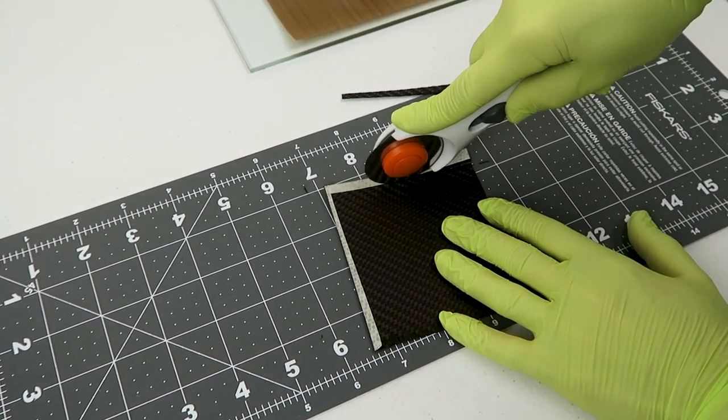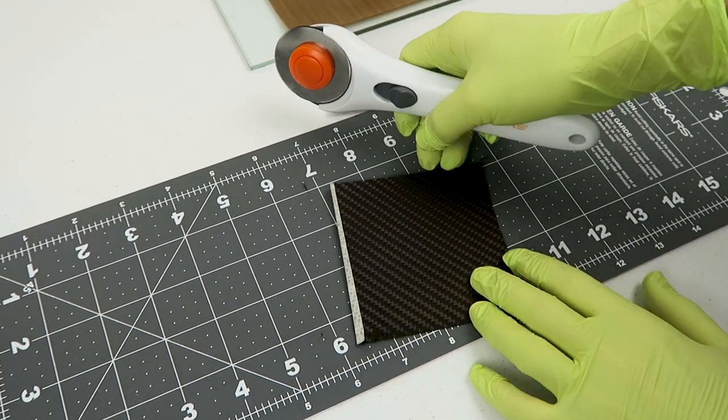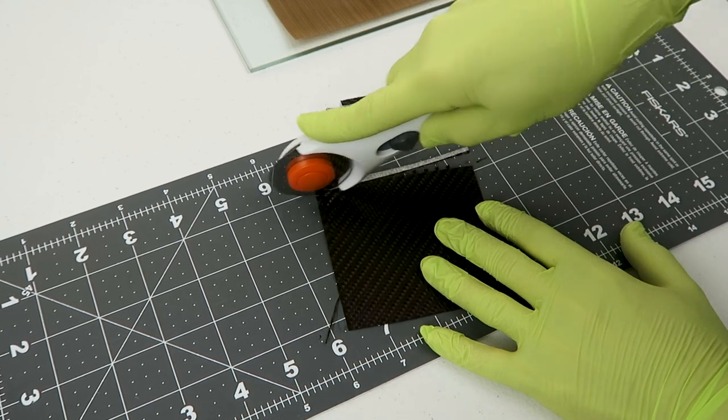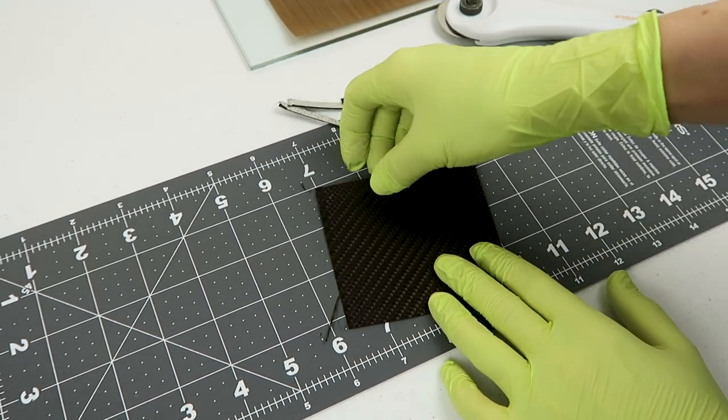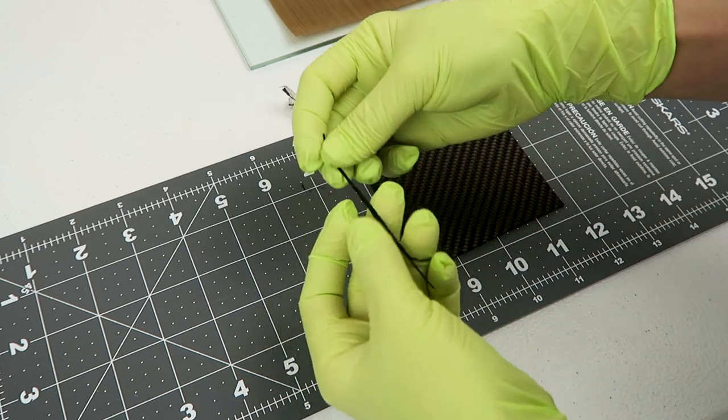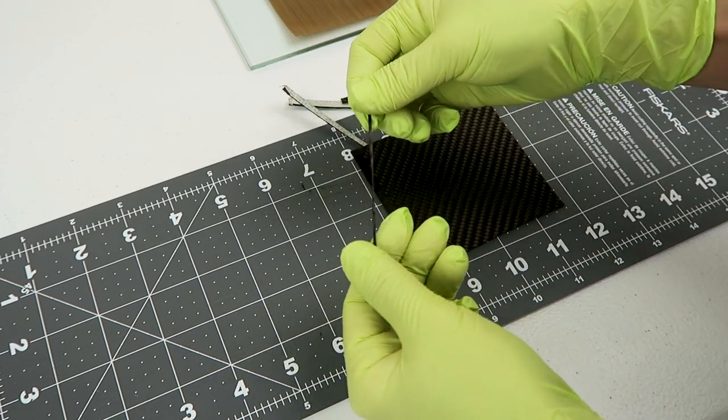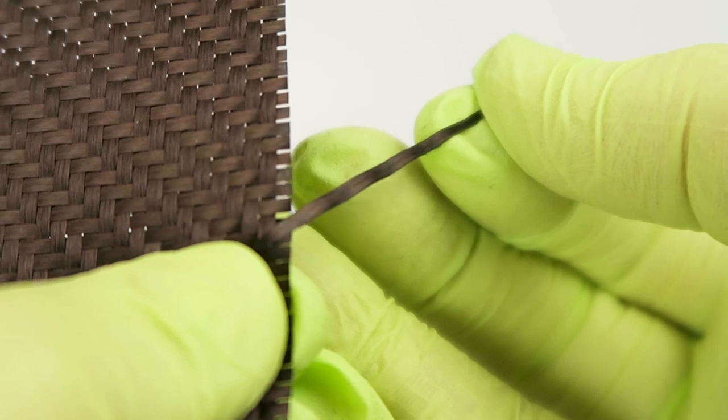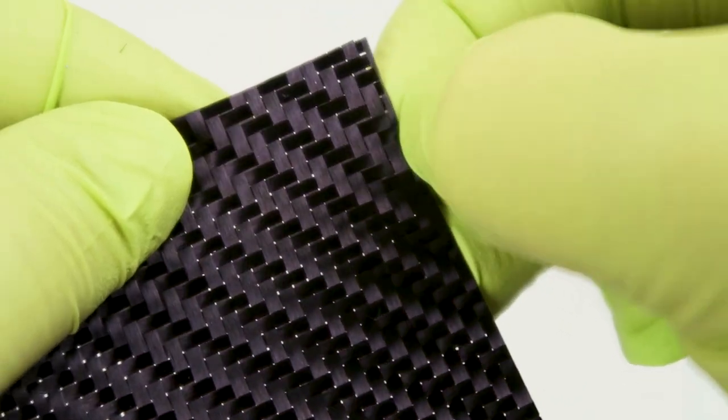However, the trade-off for something that has a treatment like this, where it's much easier to work with, is this is not going to contour around complex shapes as well as an untreated twill would. You can get quite a lot of flexibility with a plain twill carbon fiber to wrap around complex shapes. With this product, the weave is going to stay together much better, but you will not have as much ability to wrap around those contours without any wrinkling.